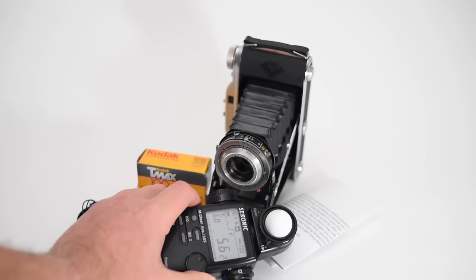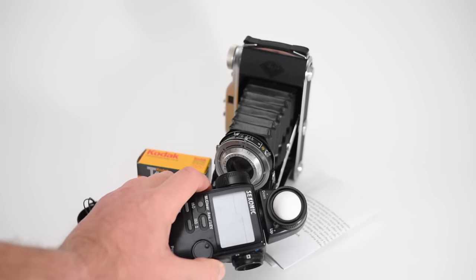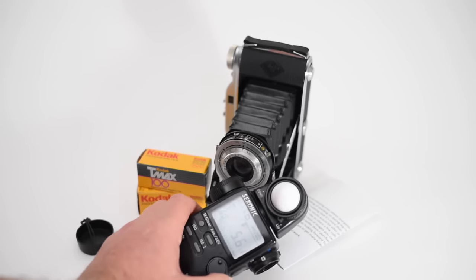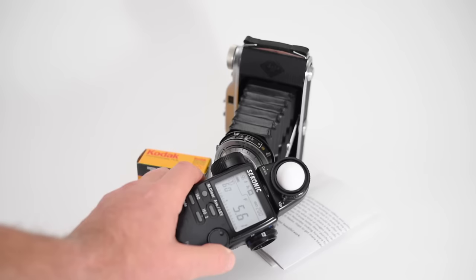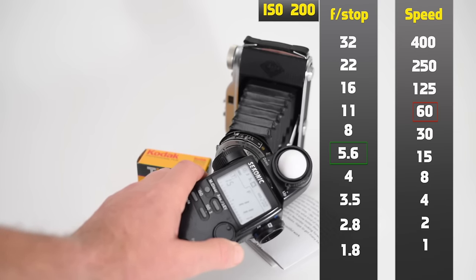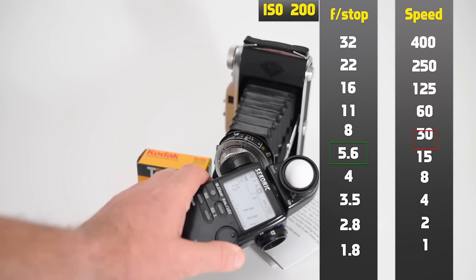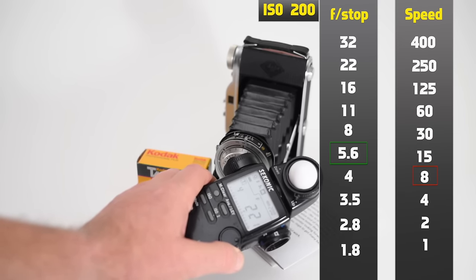So I'll just do some quick metering on the scene, and it's giving me F5.6 at 1/6th of a second, so I'll take that shot as my metered exposure, and then I'm going to go over one stop.